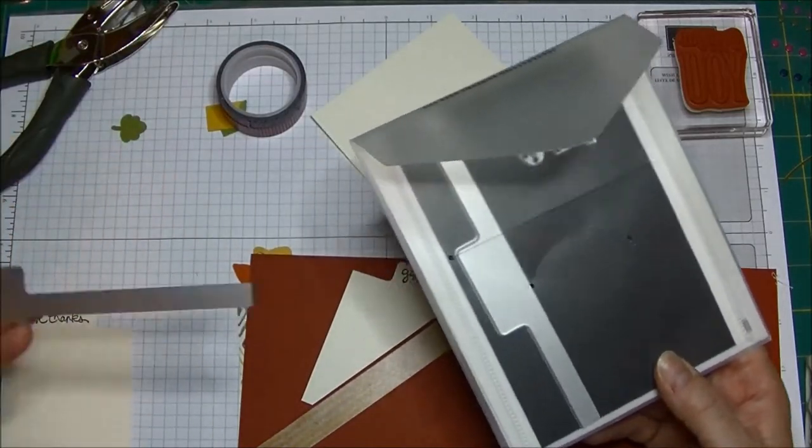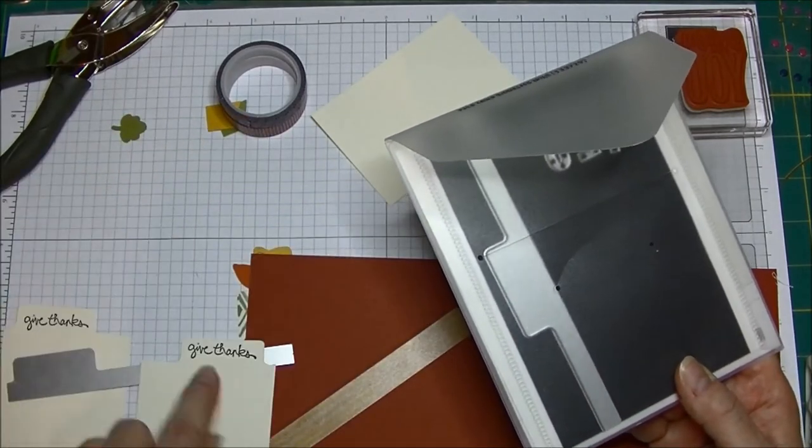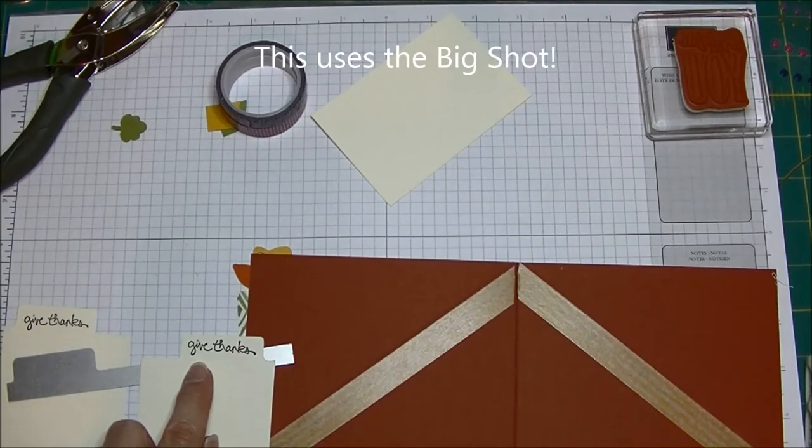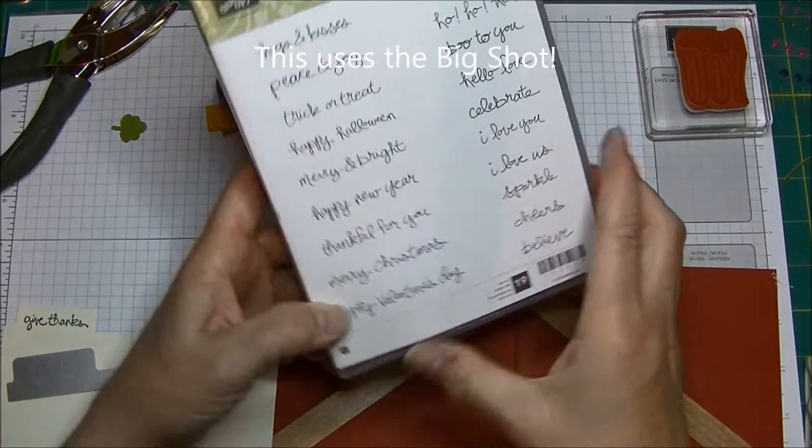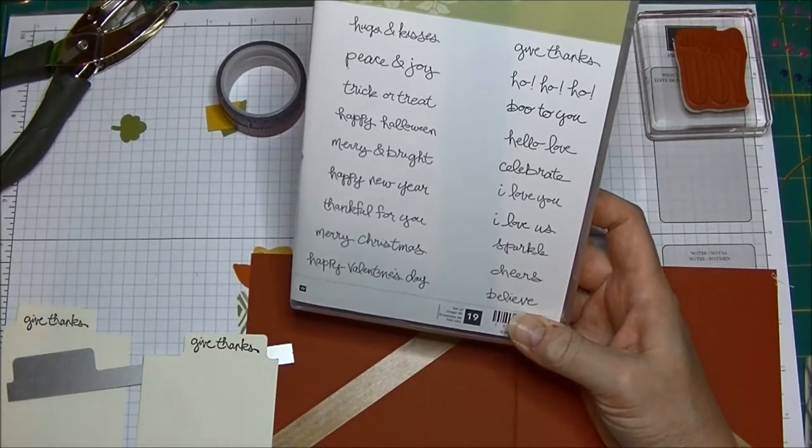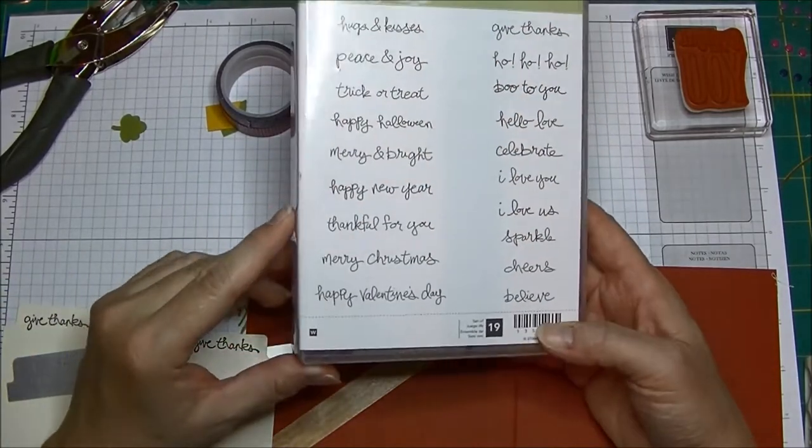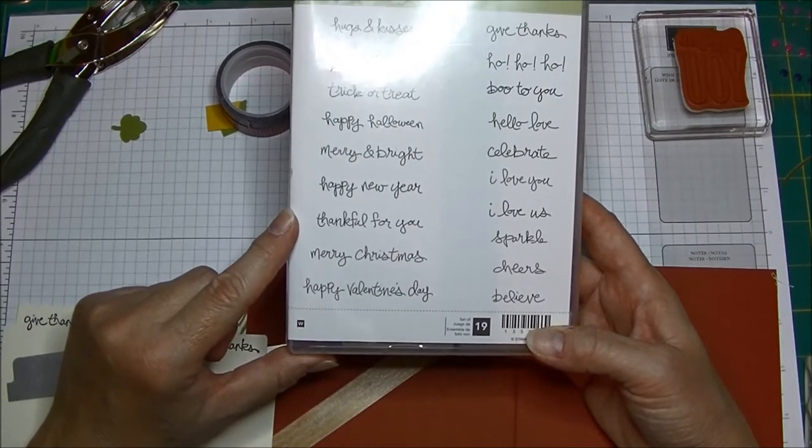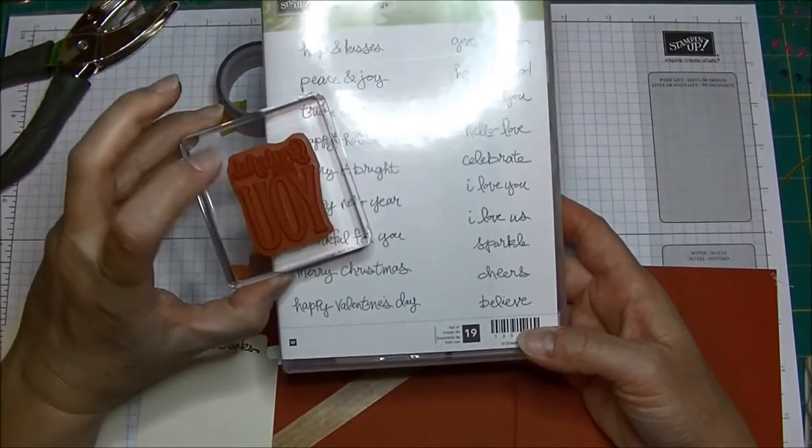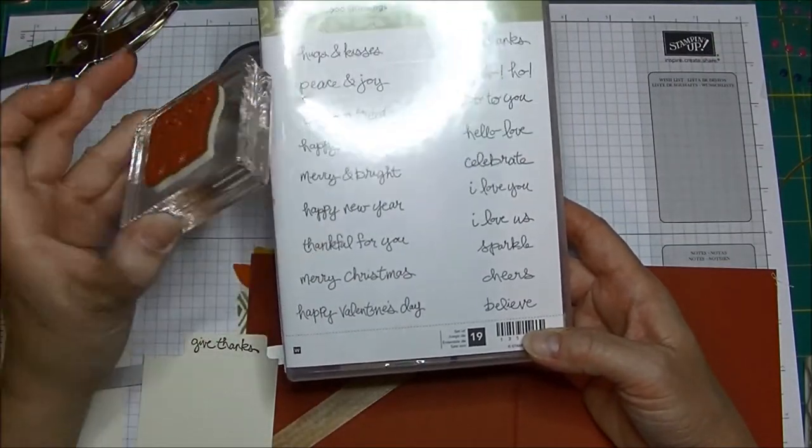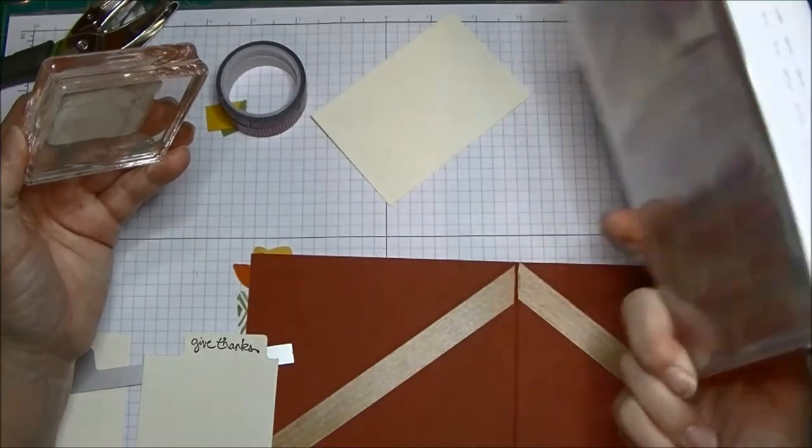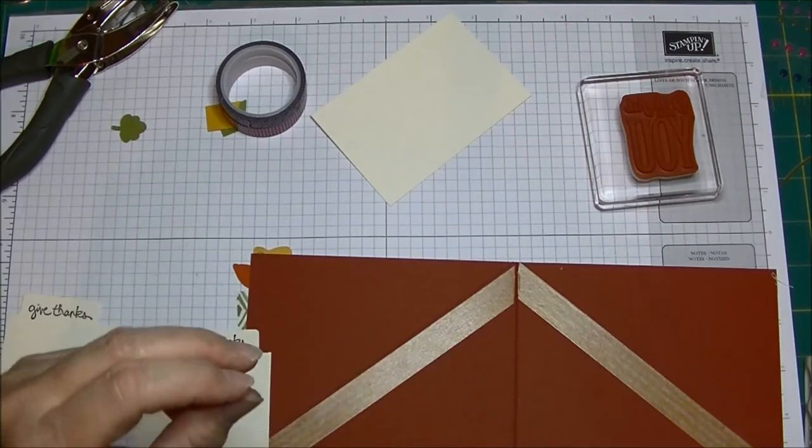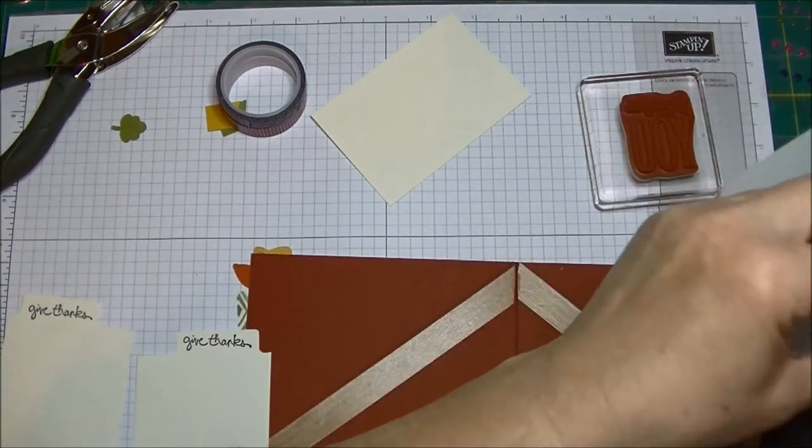Then I took these fabulous file tab edge lit dies. I took the one that has the edge at the end like this and I cut out these two little file tabs. I stamped them using the good greetings stamp set. This one is free during the month of October if you place an order of three hundred dollars or more online at mystampingstore.com. You get this stamp set for free, your choice of the clear mount stamp sets, they're still rubber, or you get the wood set like that. That give thanks comes from that, and that again is free during the month of October with an order of three hundred dollars or more.